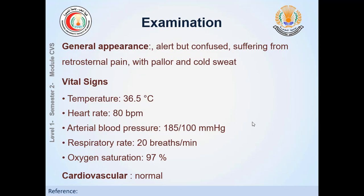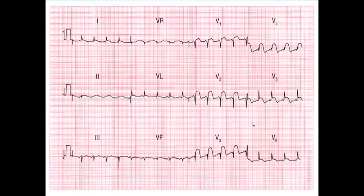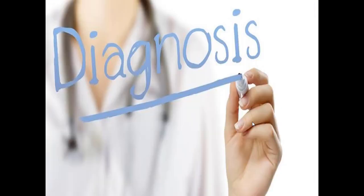We performed an examination and looked at the vital signs. All vital signs were normal except for elevated blood pressure. The cardiovascular examination was normal and the patient was conscious. We ordered an ECG because of the chest pain. The ECG showed ST-segment elevation in the anterior precordial leads from V1 to V6, which is an indicator of anterior wall myocardial infarction.